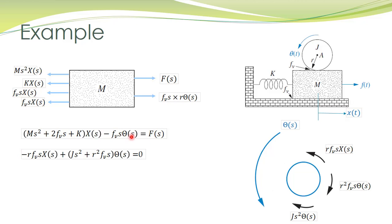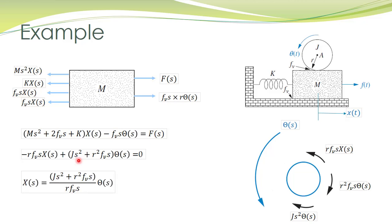Since we are interested in obtaining a transfer function between the angular displacement of this disk and the applied force, we need to eliminate X(S) from this expression. We use the second equation — the force balance equation — for that purpose. Rearranging its terms gives us X(S) in terms of the other variables.